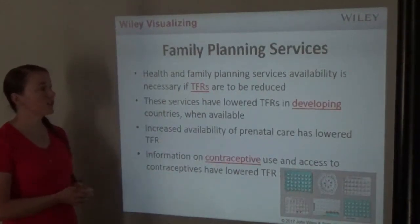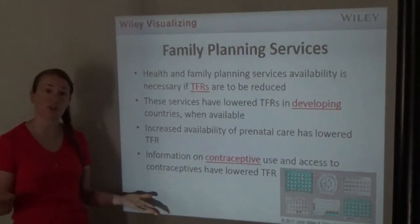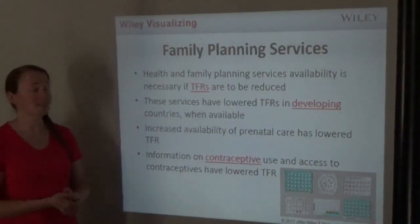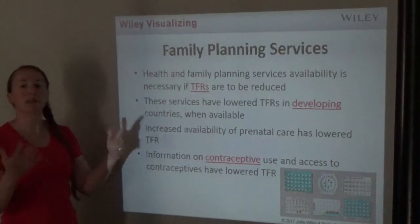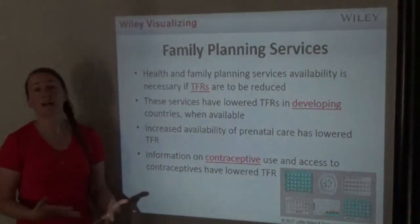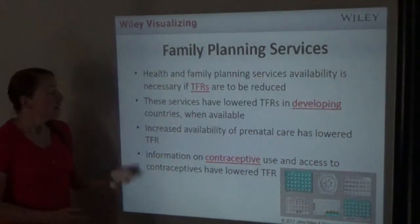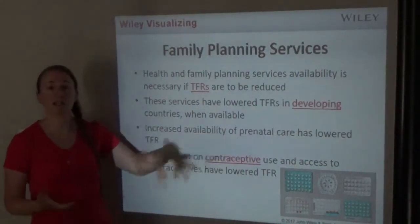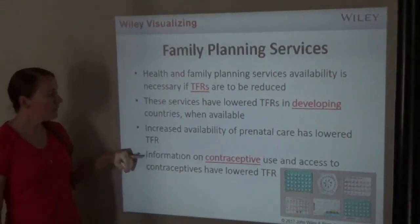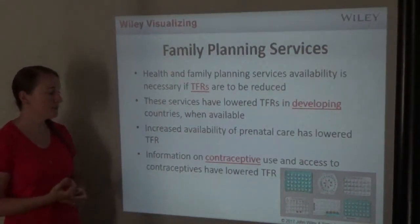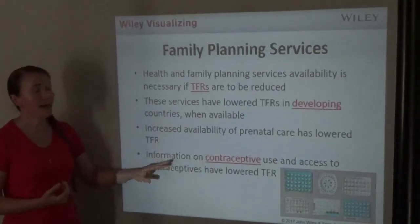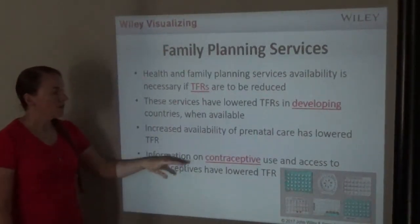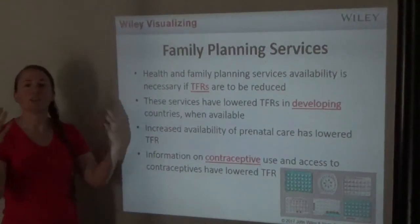Health and family planning service availability is necessary if total fertility rates are going to be reduced globally. These services have lowered TFR in developing countries where available. Increased availability of prenatal care lowers infant mortality, which lowers birth rates. Access to information on contraceptive use and to contraceptives themselves has also lowered total fertility rates — if you don't have access to contraceptives, you can't prevent having more babies.